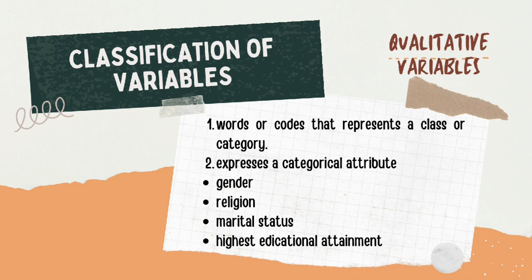Next is the classification of variables. In qualitative variables, words or codes represent a class or category, and express a categorical attribute such as gender, religion, marital status, and highest educational attainment.